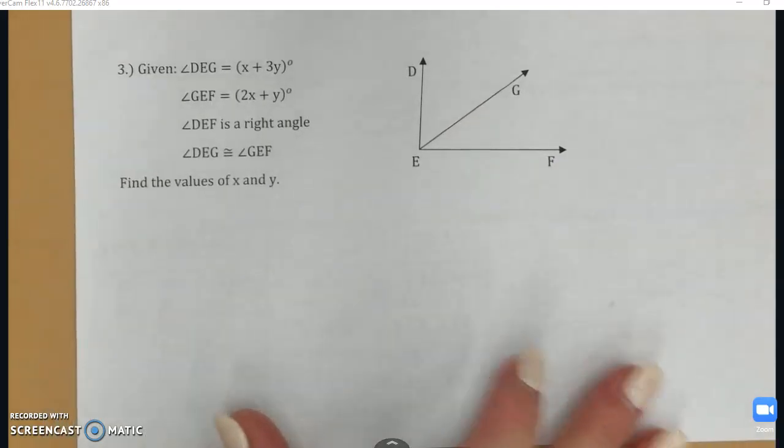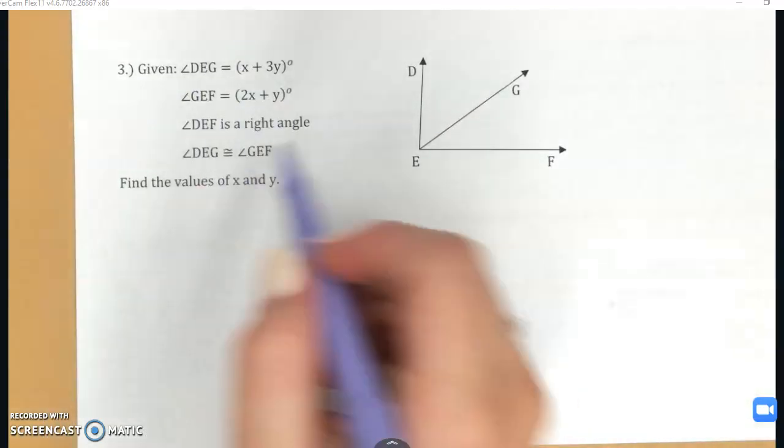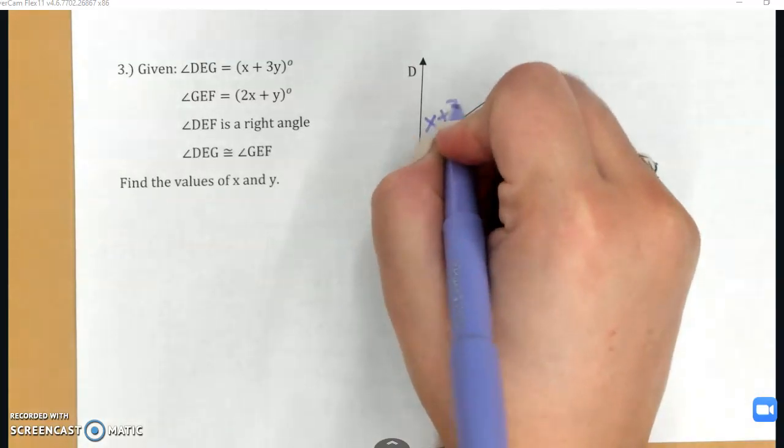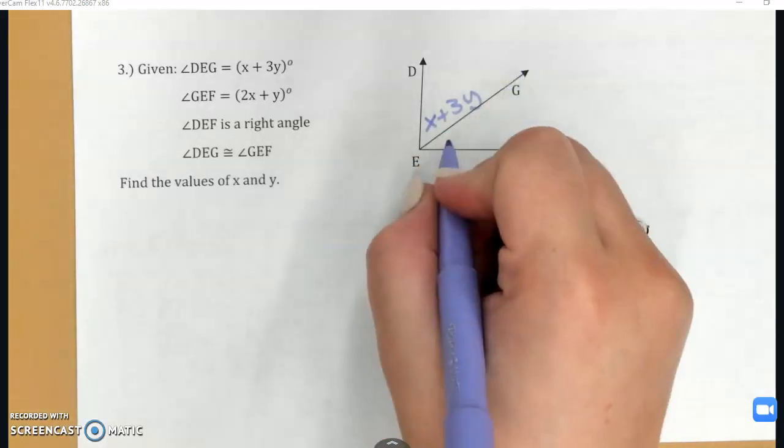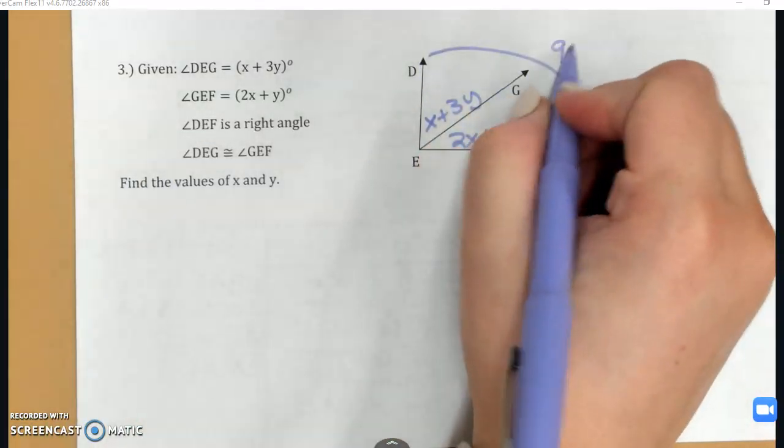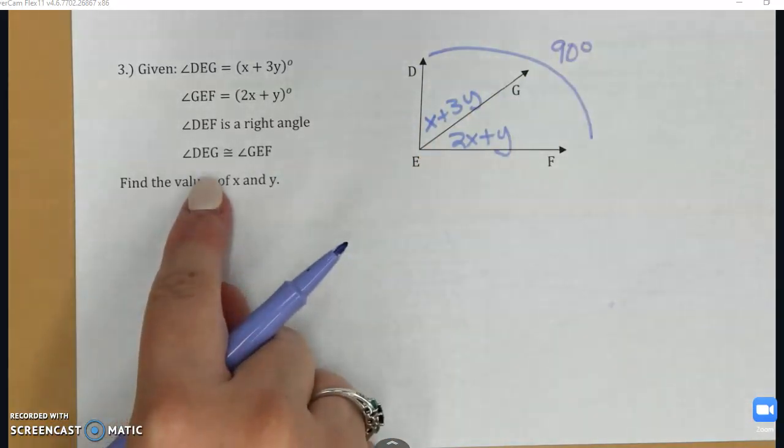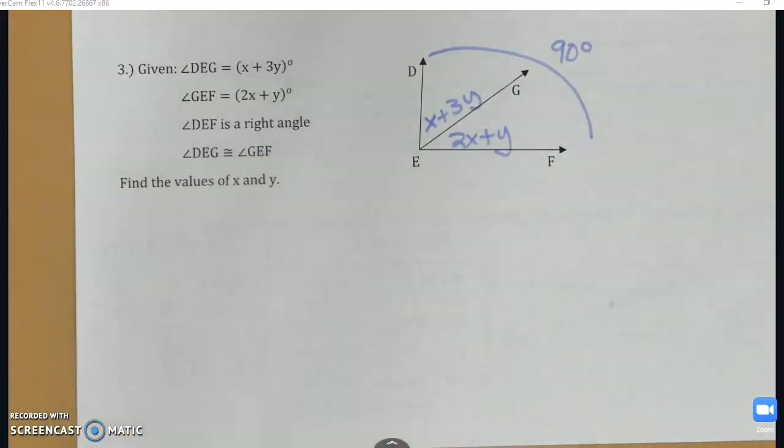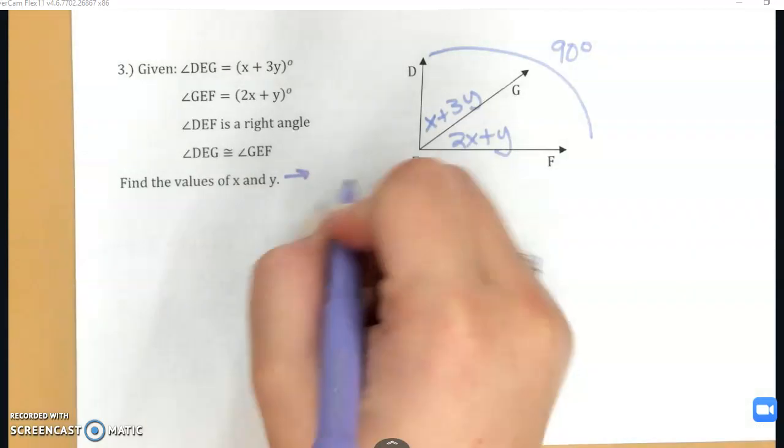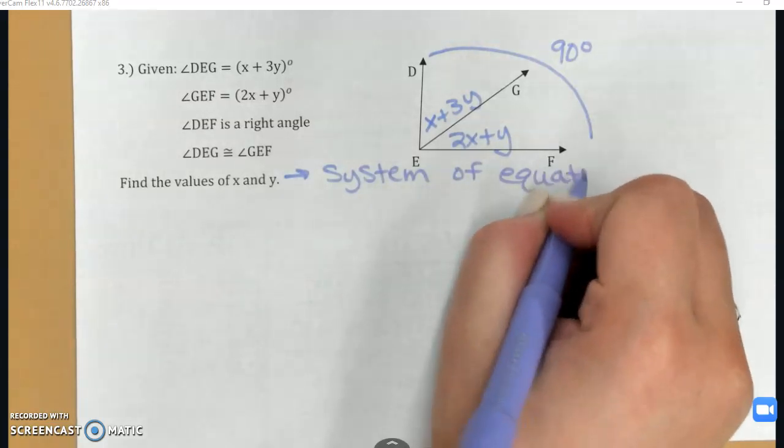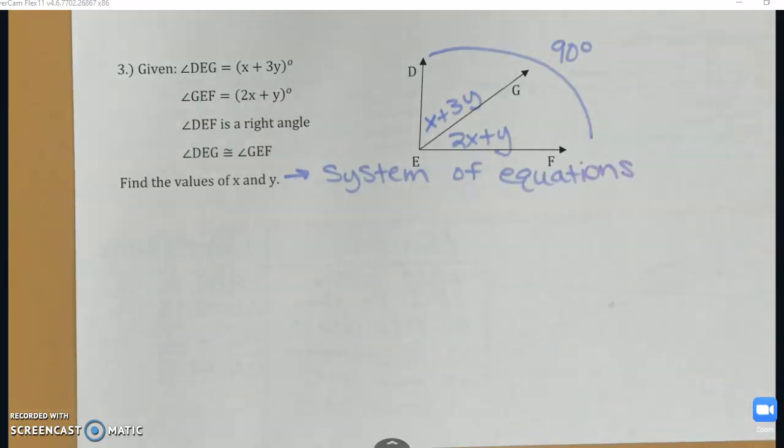Okay, and then our last problem for these notes, I've given a diagram and some information, so I'm going to label my diagram with these givens. Angle DEG is X plus 3Y. Angle GEF is 2X plus Y. And angle DEF is a right angle, which means it's equal to 90 degrees. And then we're also told that DEG is congruent to GEF. So these two angles are congruent to each other. Find the values of X and Y. When I have two variables I need to solve for, this means I'm going to need a system of equations.